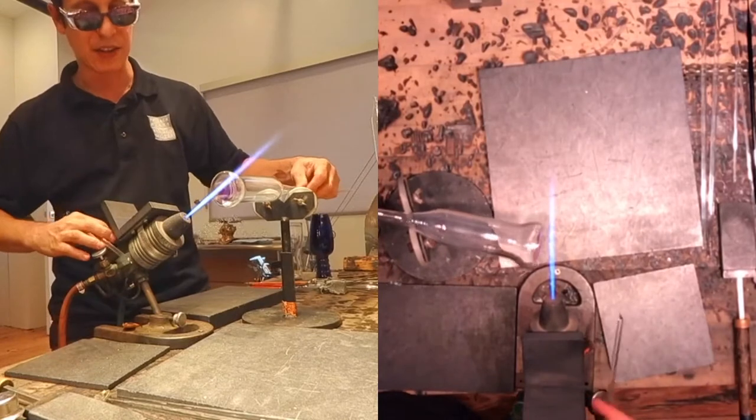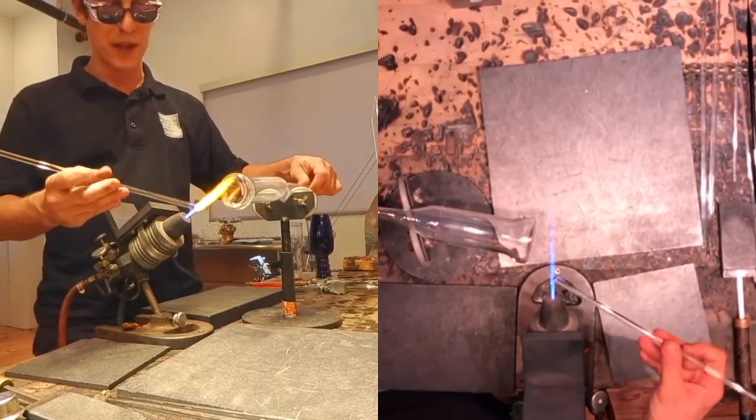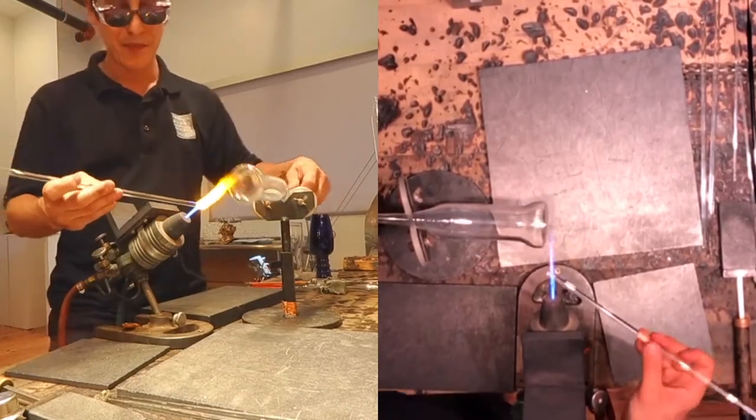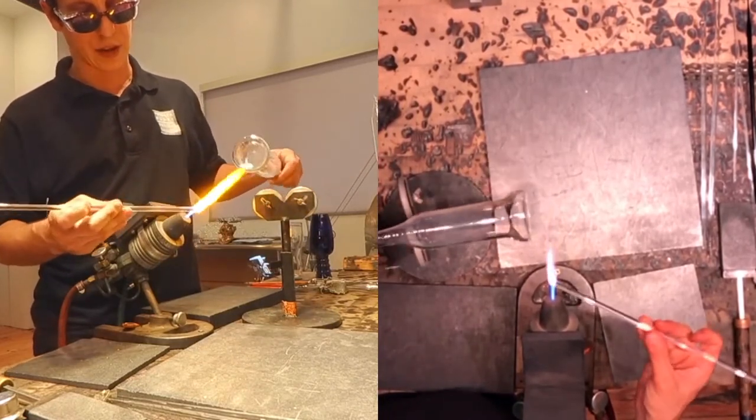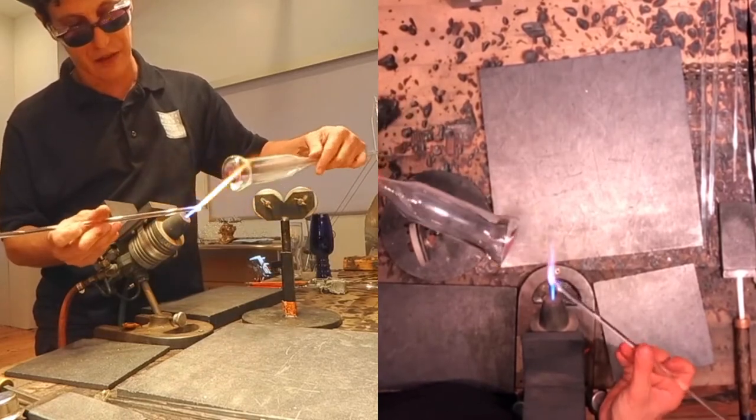So then I attach a handle. And we can do punties, but for today's concerns, we've been welding our handles to it because you don't want it to go flying. So first I get the tip of my glass rod hot.